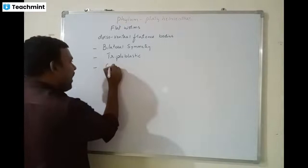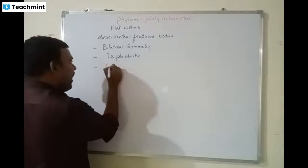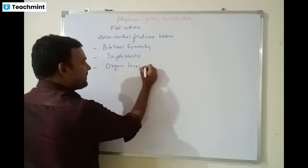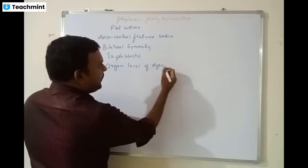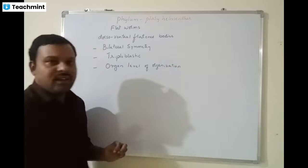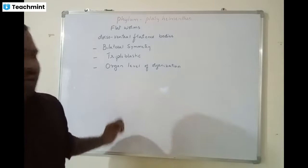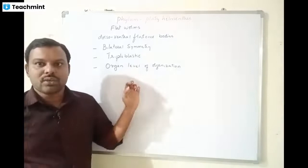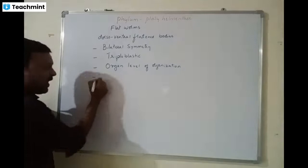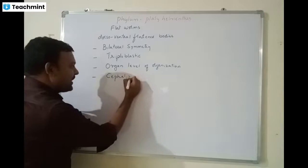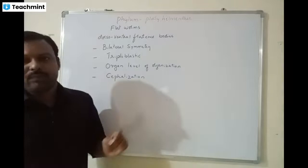This is the first group to start showing organ level of organization. We have seen that Porifera shows only cellular level of organization, whereas Cnidaria and Ctenophora show tissue level of organization. This group is the first to show organ level of organization, and importantly, cephalization — the formation of the head — is also seen in this group. They are acoelomates.